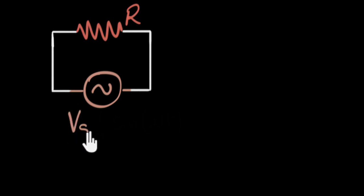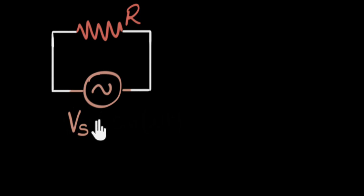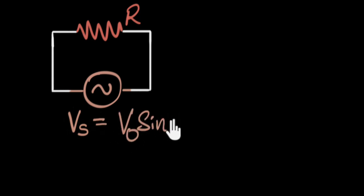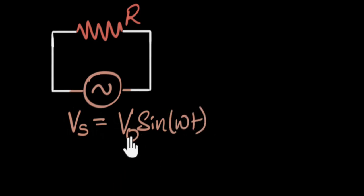In this video, we'll attach a resistor to our AC generator and see what the relationship is between the current in the circuit and the voltage of the generator. Just to quickly recap, we've seen the voltage equation before. The generator equation can be written as the instantaneous source voltage equals V naught times sine omega t. V naught represents the maximum value of the voltage because the voltage is continuously fluctuating, and this function tells you how the voltage is fluctuating.